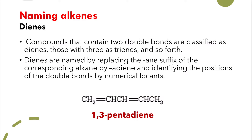What if you have more than one double bond in your structure? If you do, you need to give each double bond a number. And instead of saying 'ene', you're going to say 'diene' if it's 2, 'triene' if it's 3, and so on.